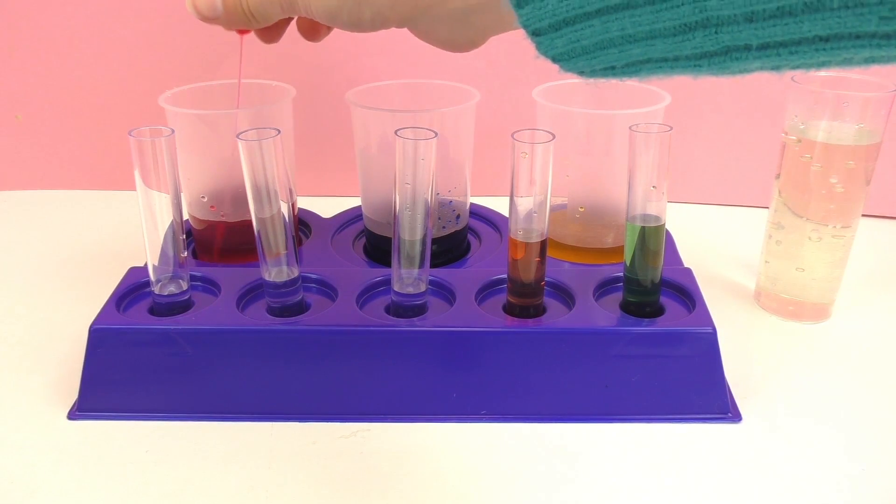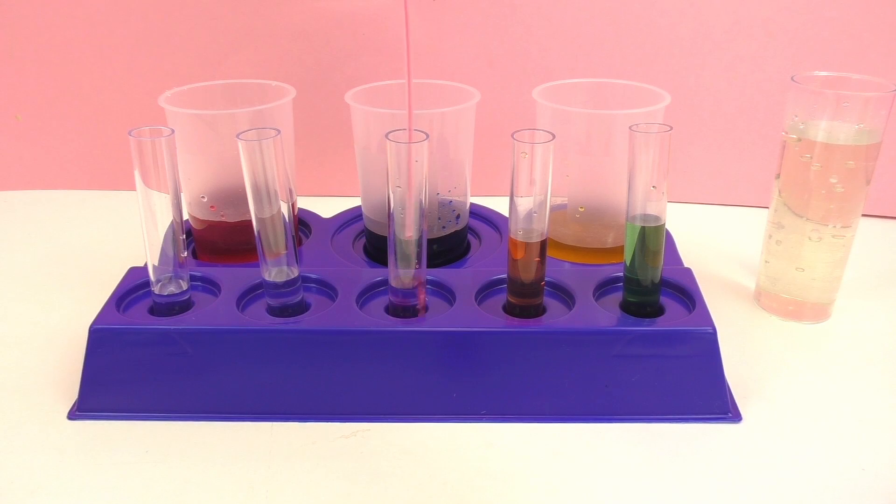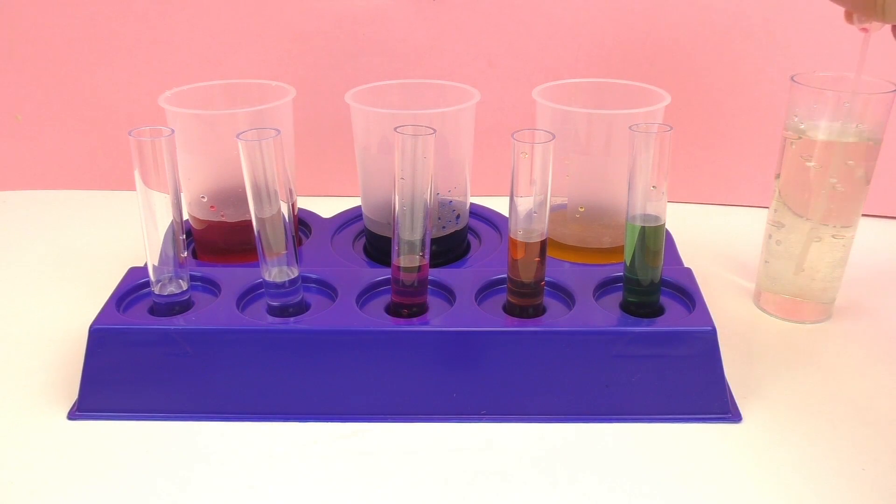Now finally we're going to be mixing red and blue together. Again I want you to take a moment and think about what color this could make. So put some red in. We're going to wash out our eyedropper and then finally some blue.